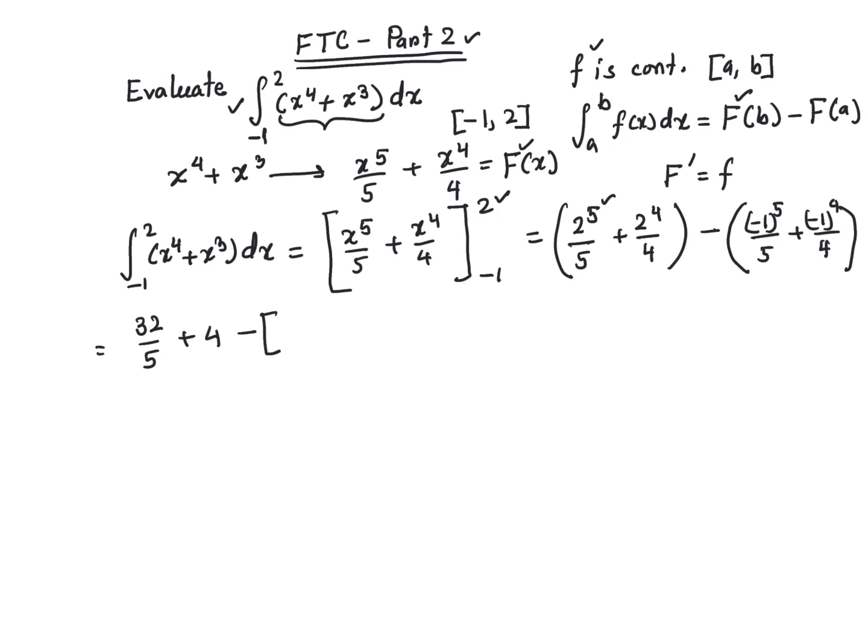I'm going to put it inside a square bracket. (-1)^5 is -1, so that's -1/5, and this is going to be positive 1, plus 1/4.